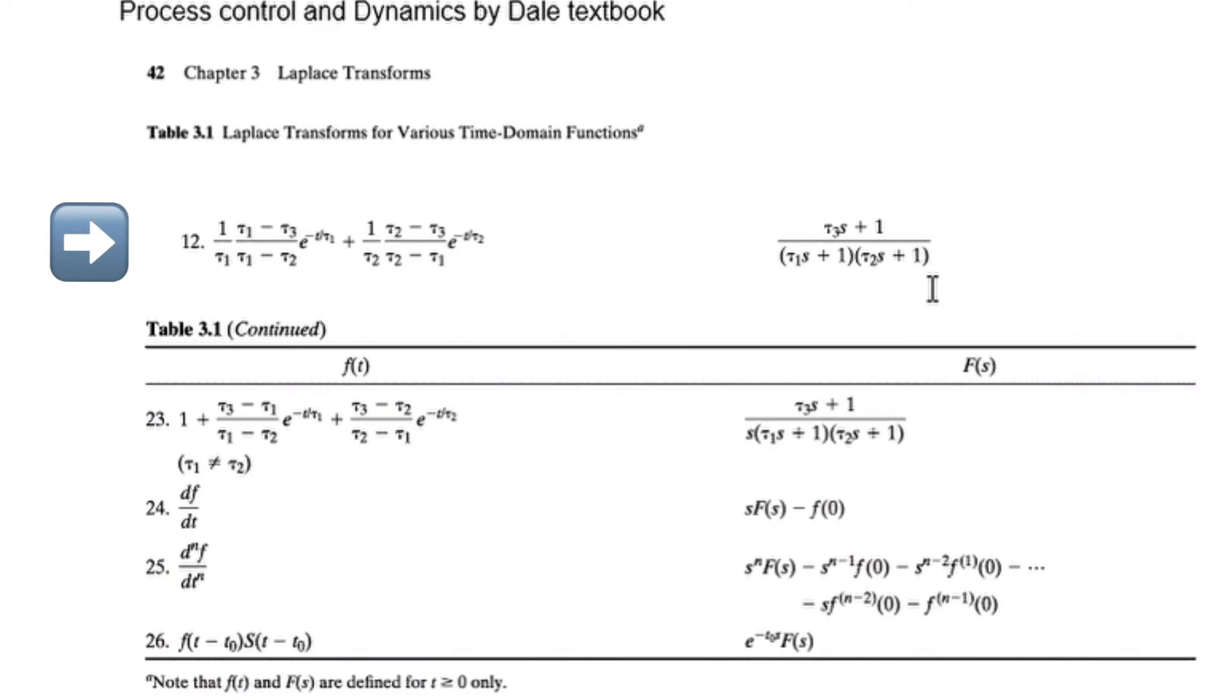Looking at the given function, if we transpose it directly into its time domain, we would choose point number 12. But we are told it's for a step input with magnitude 0.5, so since there's a step change in our process, we're going to look at point number 23.